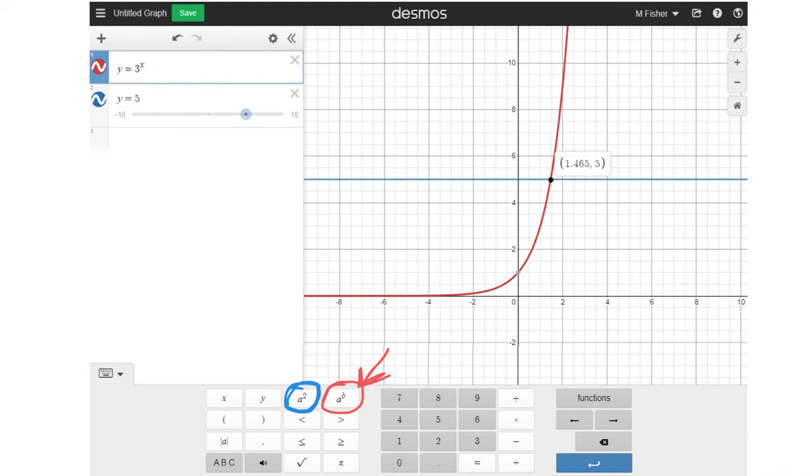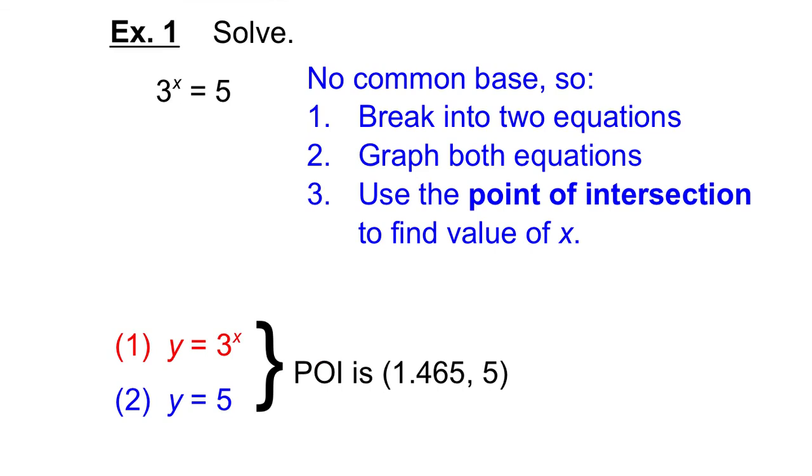Okay, so I typed in my two equations, it made the graph, and then I clicked on the point of intersection, and it gave me the coordinates. So remember what coordinates means, it gives you the x and the y coordinate. So of course y equals 5, because y equals 5, that's in the equation. But x is equal to 1.465. So when it gives me the coordinates for the point of intersection, it actually tells me the value of x. So back to my example here, 3 to the x equals 5, I typed in those two equations, the left side and the right side of the equation, and I got this as my point of intersection, so I can say, therefore, x equals 1.465.